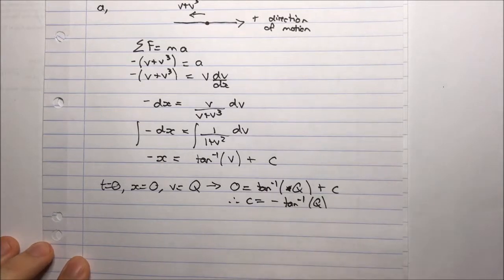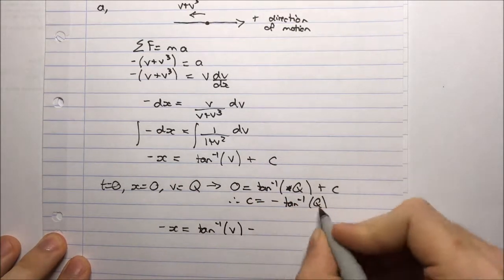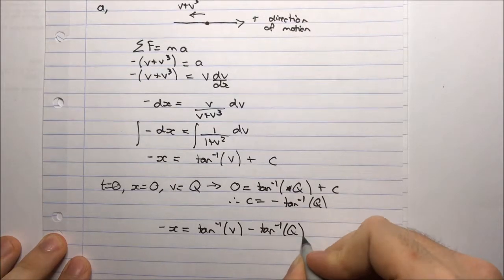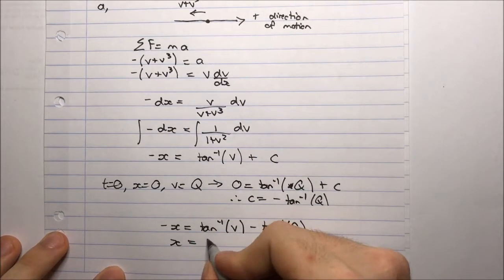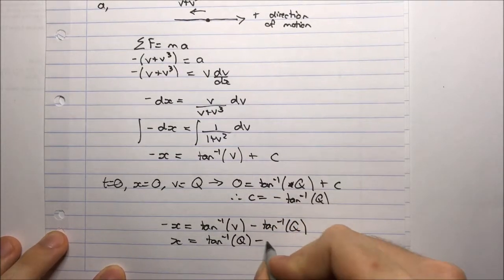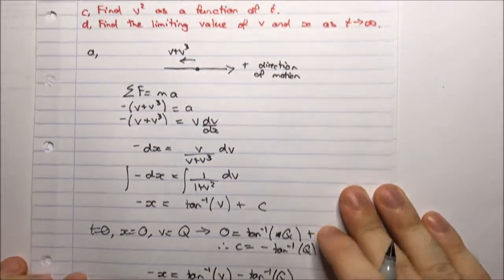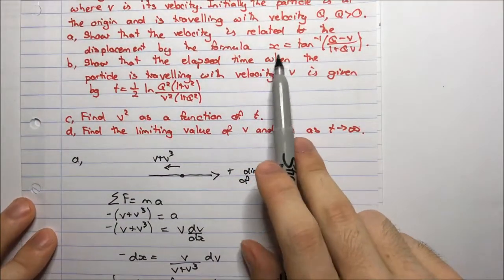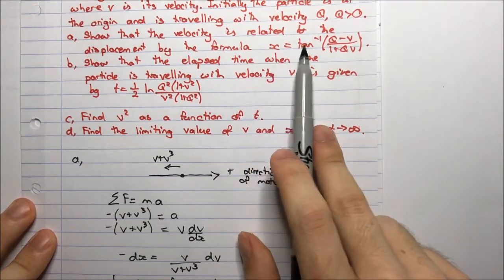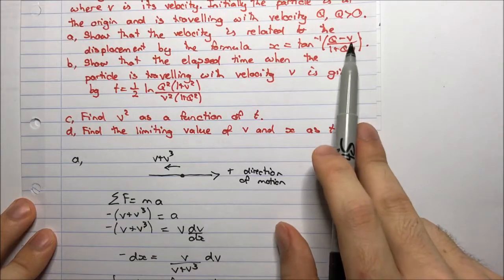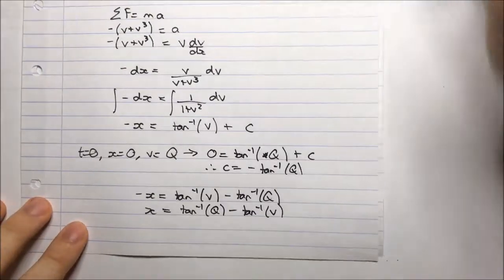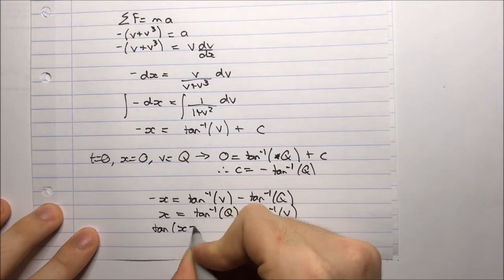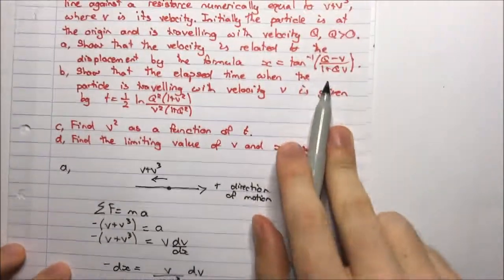Substituting back: negative x equals arctan(v) minus arctan(q), which rearranges to x equals arctan(q) minus arctan(v). We want this in the form x equals arctan of a single expression. Taking tan of both sides: tan(x) equals tan(arctan(q) minus arctan(v)).